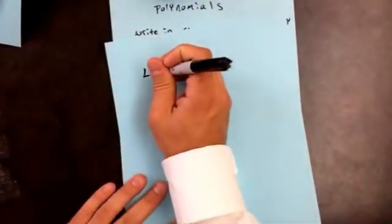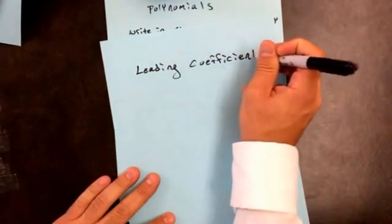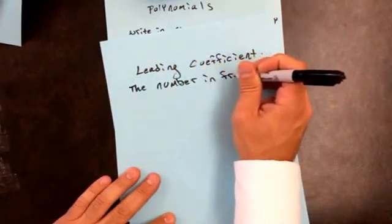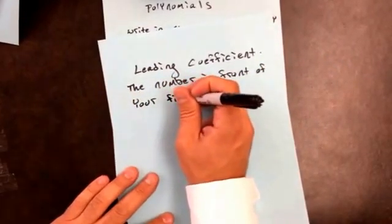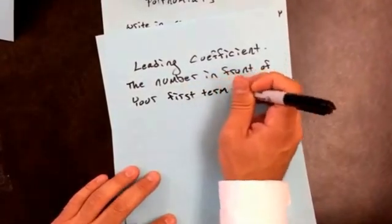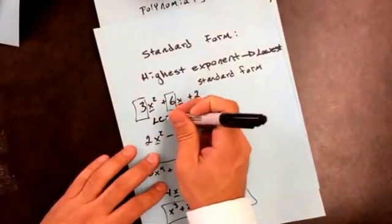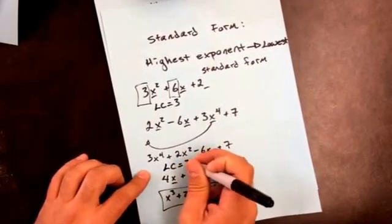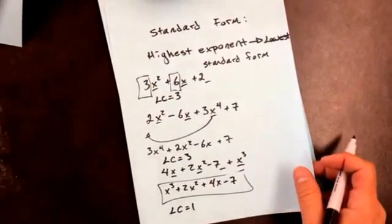That's not the only thing they'll ask you for — they'll also ask for the leading coefficient, which is the number in front of your first term. So using the examples I already did: this one is in standard form and the number in front is a 3, so the leading coefficient is 3. The second one, after getting it in standard form, the leading coefficient is also 3. And this one, once in standard form, the leading coefficient is 1.